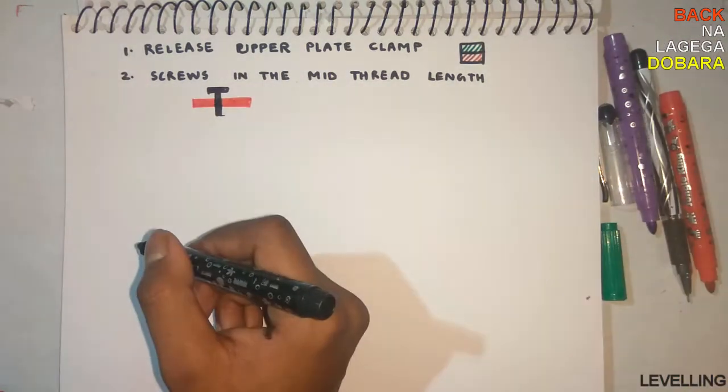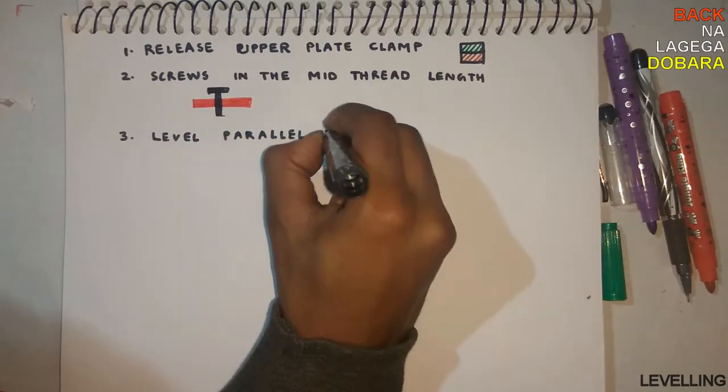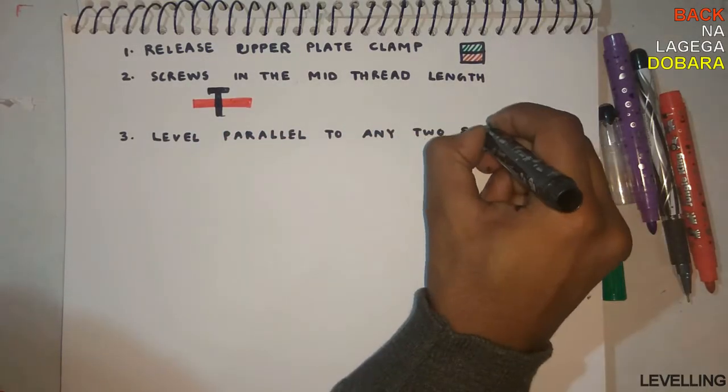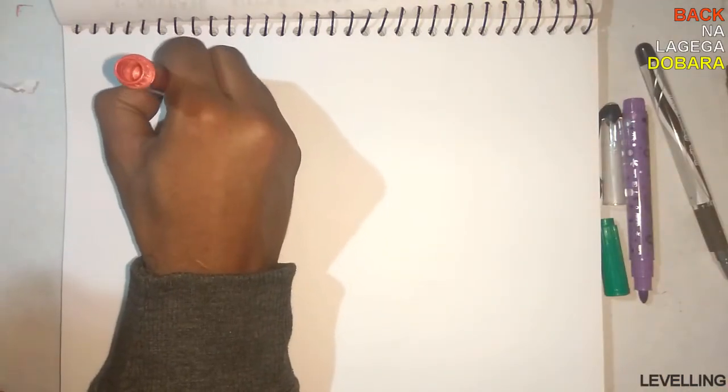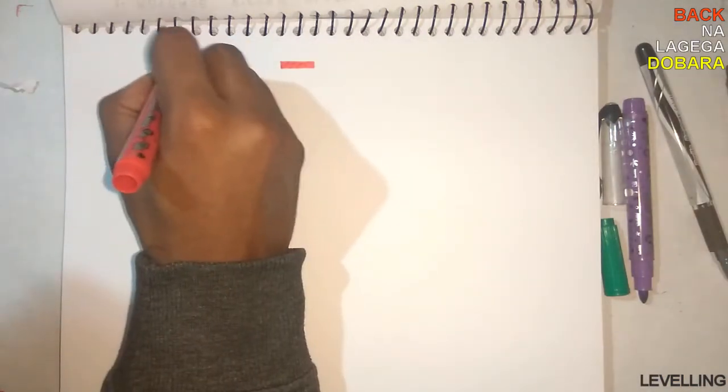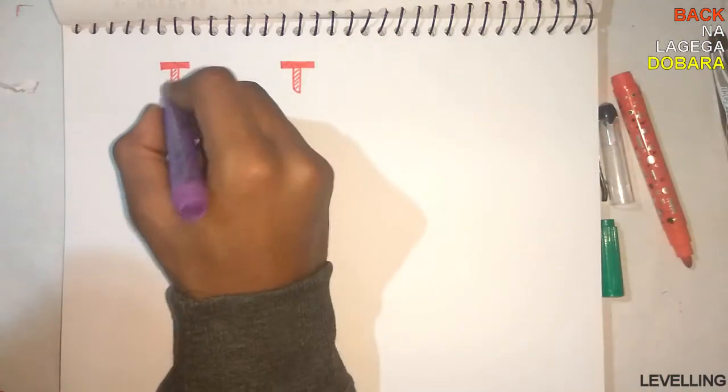The level should be parallel to any two screws. Let's see how. For example, assume these two are the screws. There are three screws mainly, but let it be the two screws, and this is the plate.